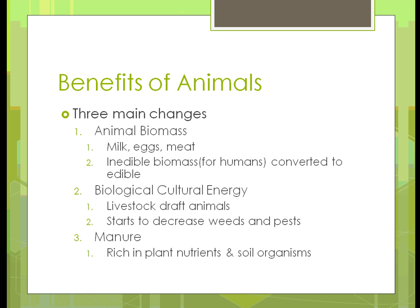What are the benefits of having animals? Three main areas: first, animal biomass — they create milk, eggs, and meat depending on the type of animal. It creates an incredible biomass for humans, and if you bring that back to individual farms, all that meat will be close to the source. That's one of the big changes for farming — we won't have all the expense for external inputs like gas and transportation.